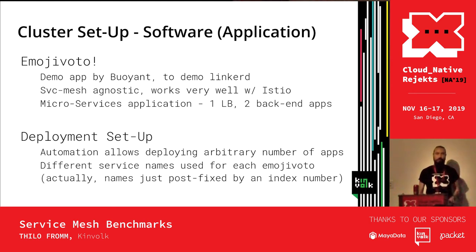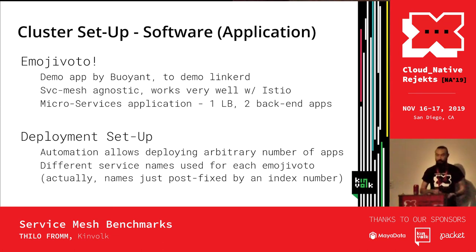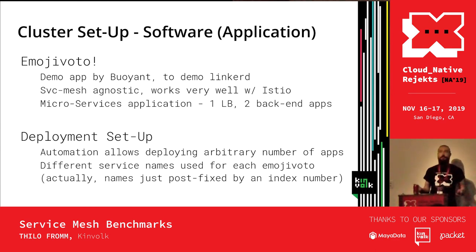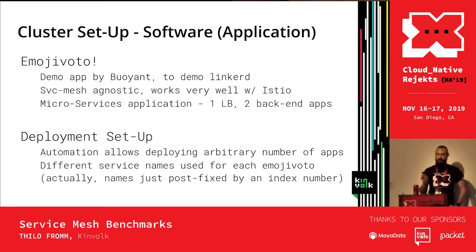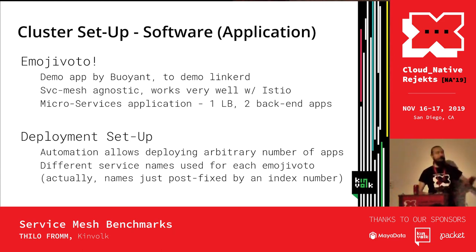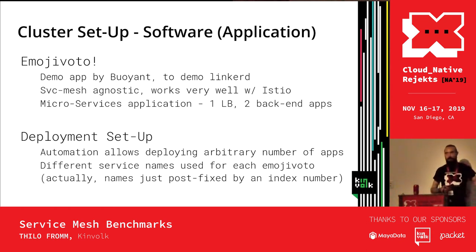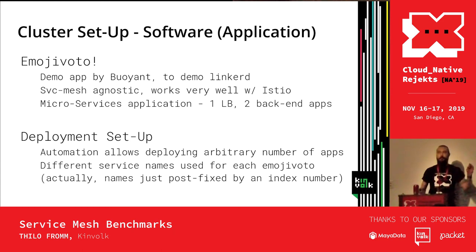The actual benchmark application we used is called EmojiVoto. It's a demo app shipped with Linkerd for playing around, but it's completely service-mesh agnostic — it doesn't even need a service mesh. That was important because we also did bare metal benchmark runs to understand the price you pay for just running a service mesh. It's great for this benchmark for two reasons: it's a microservices app consisting of three microservices, and it's easily scriptable for deployment so you can deploy it many times just by changing the service endpoint name.